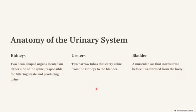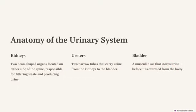Next we have natriuretic peptides, which help to decrease blood volume and pressure by promoting sodium excretion. Then we come to the bladder — a muscular sac that stores urine before it is excreted from the body.